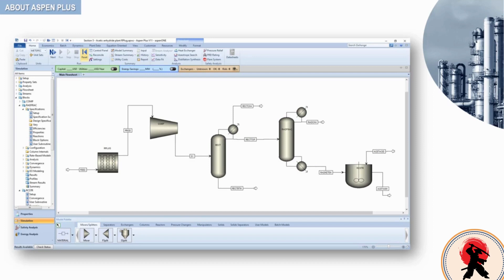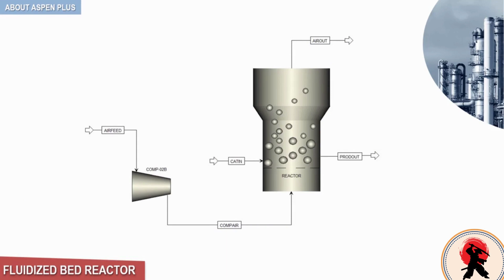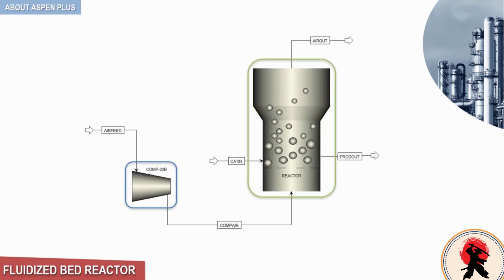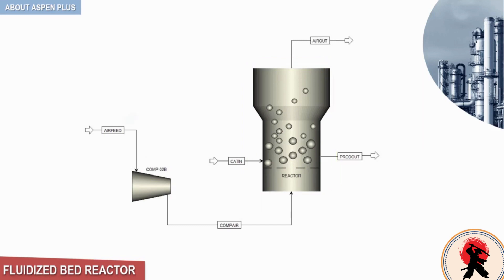In terms of ASPEN PLUS flow sheet notation, there will be a block icon and a stream icon. Take a look at the following example — it represents a typical ASPEN PLUS steady-state flow sheet. Here you can see two blocks: one for a centrifugal compressor and another for a fluidized bed reactor. A thin solid black line represents a process stream, such as the air feed to the compressor or the catalyst feed to the reactor.